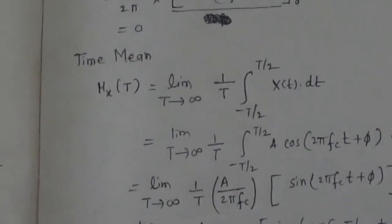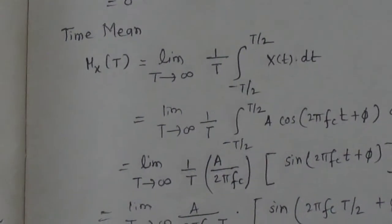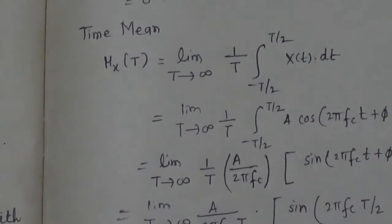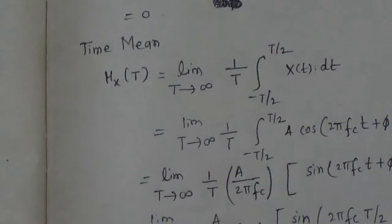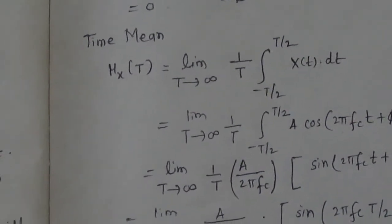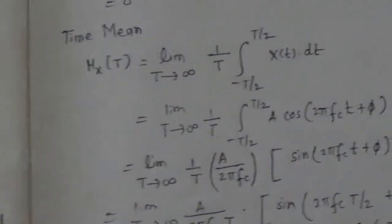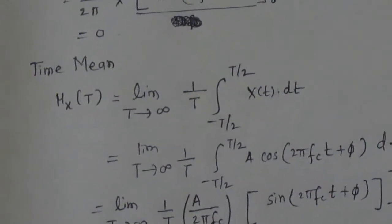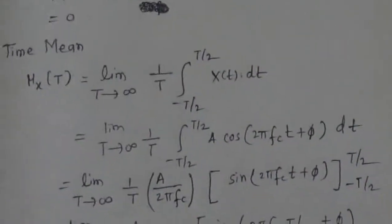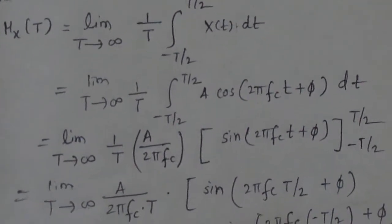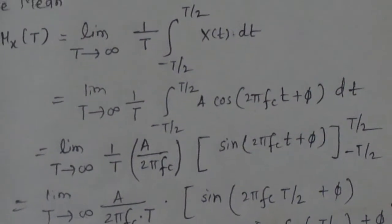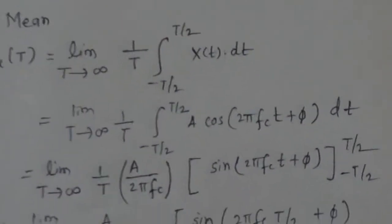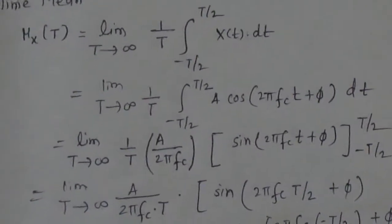Now we will calculate the time mean. The time mean can be calculated by the formula: limit as T→∞ of (1/T) · ∫ from −T/2 to T/2 of x(t) dt. Substituting x(t) = A·cos(2πfc·t + φ), we get limit as T→∞ of (1/T) · ∫ from −T/2 to T/2 of A·cos(2πfc·t + φ) dt.